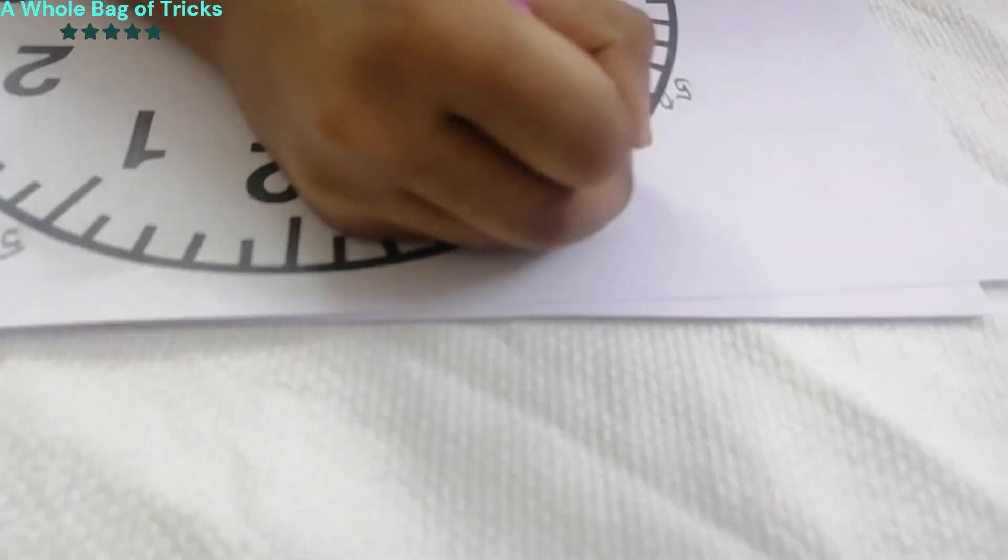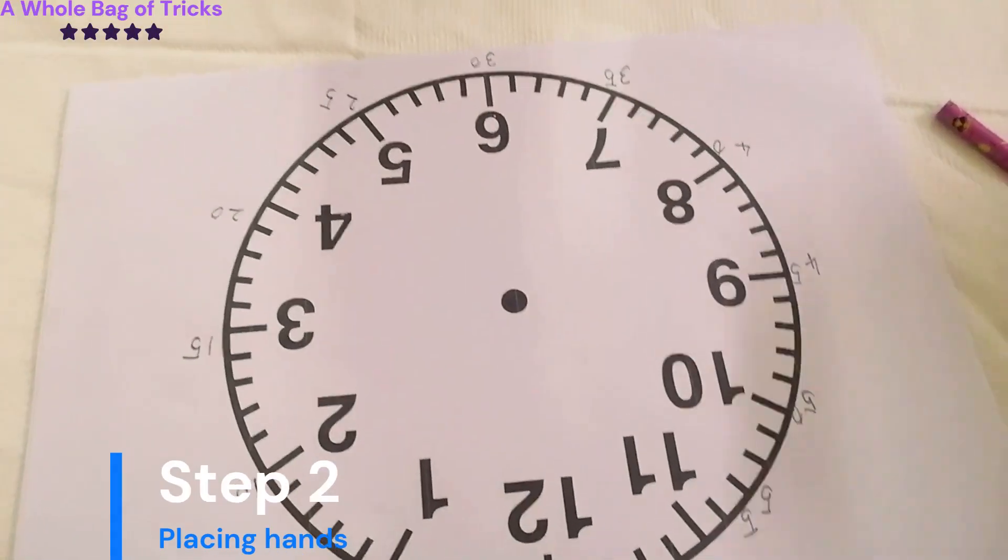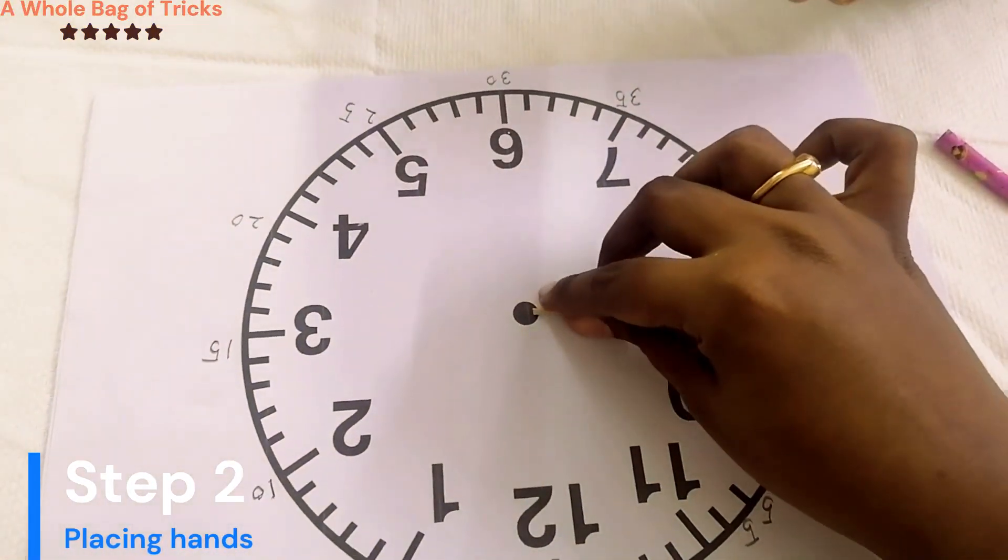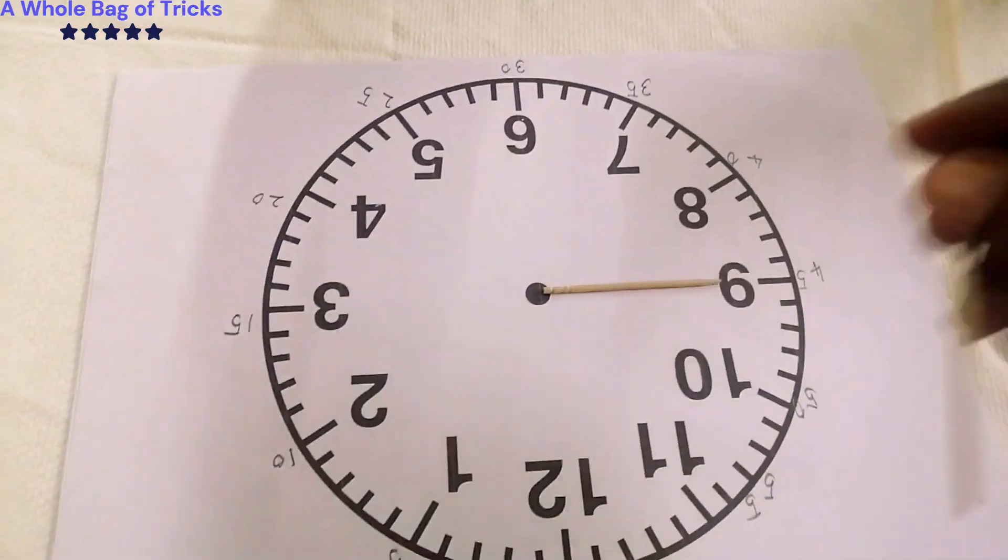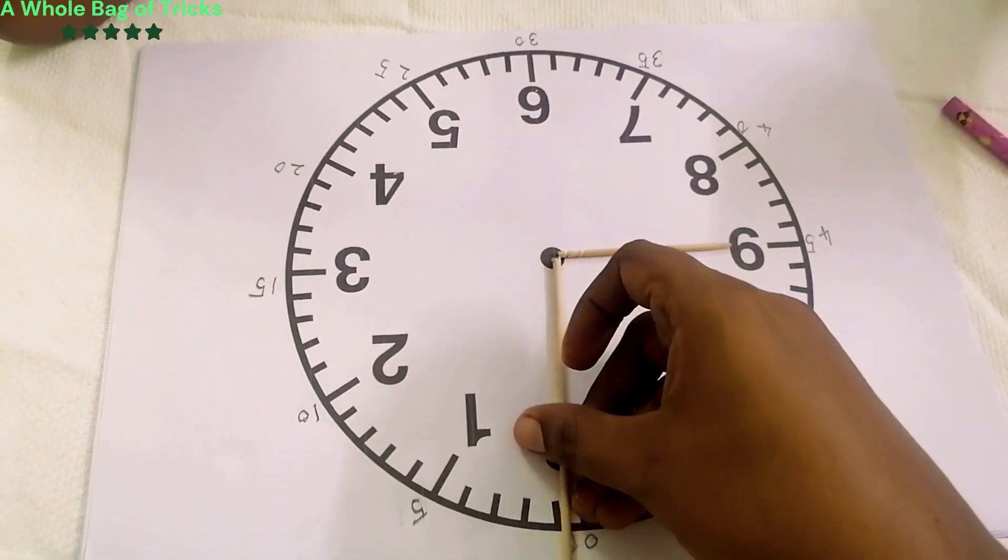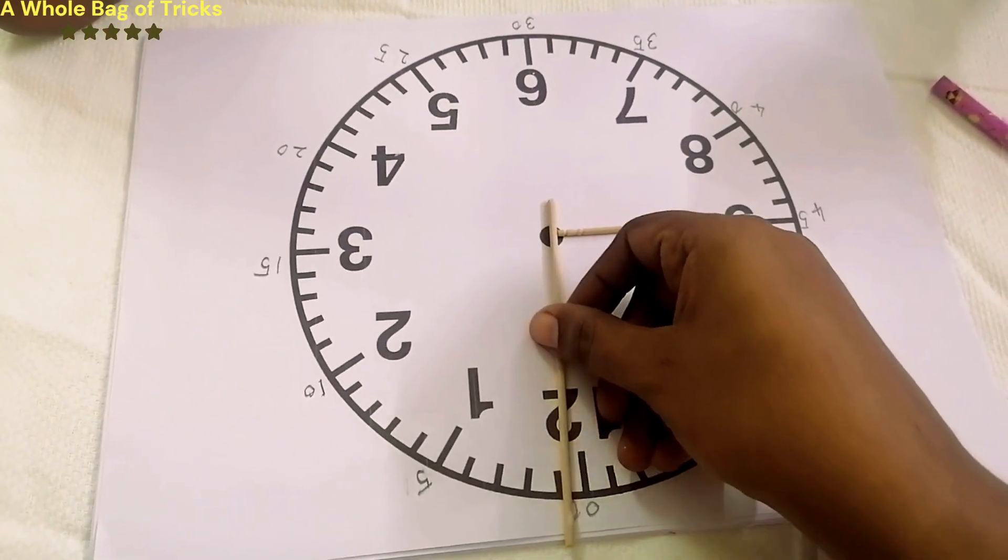Now use two sticks. One should be long enough to touch the minutes value written outside the clock's face. The hour's hand should be short enough to touch the numbers inside the clock's face.